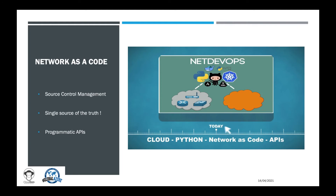And here it comes: network as a code. Network as a code is the application of the infrastructure-as-a-code concepts to the full network domain. The successful implementation of network as a code is part of a wider strategy called NetDevOps adoption within an enterprise, and will involve significant changes in the way we think about network design and operations, the culture around network change, and the tooling and technology used to build and manage configurations.